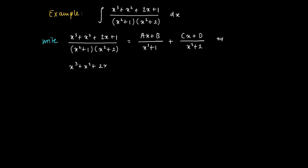Again we work back, and if we do so we will find that x to the power of 3 plus x squared plus 2x plus 1 should be equal to Ax times x squared plus 2 plus B times x squared plus 2.